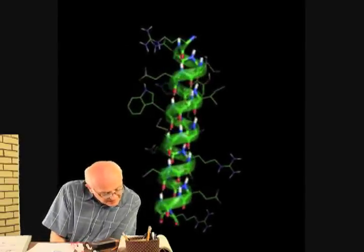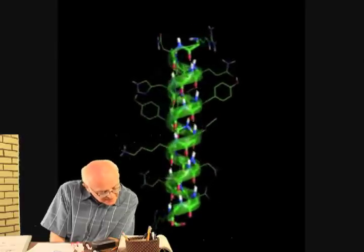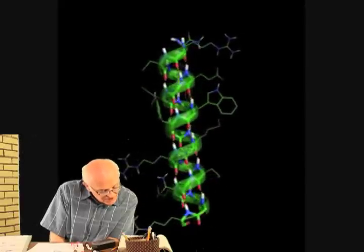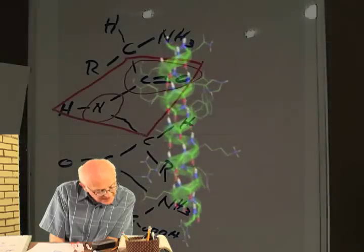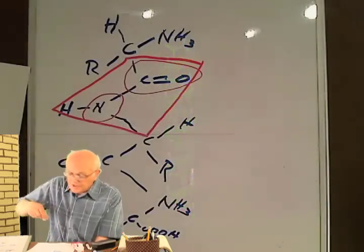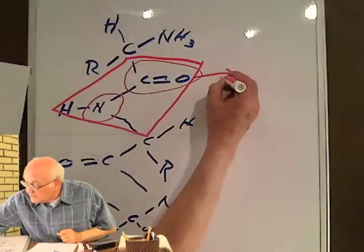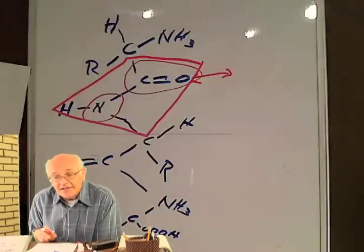In the alpha helix, each hydrogen bond is formed between the hydrogen atom attached to the electronegative nitrogen atom of one peptide linkage and the oxygen of the carbonyl group of the fourth amino acid behind it. So this forms a bond with this one, the fourth one behind it.